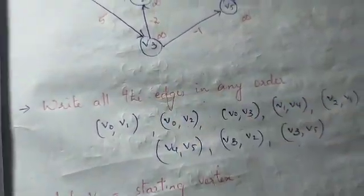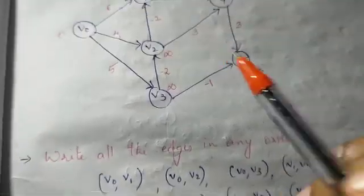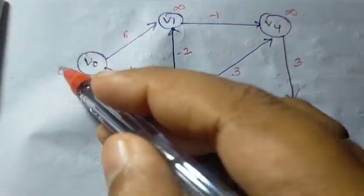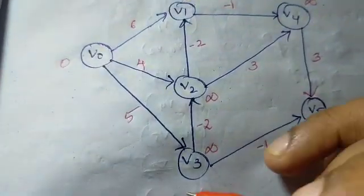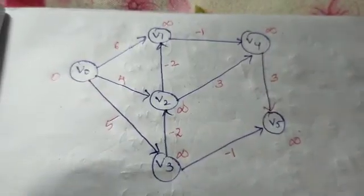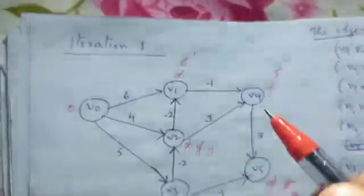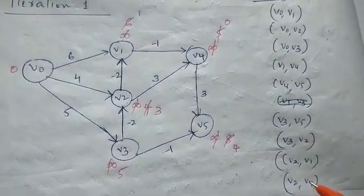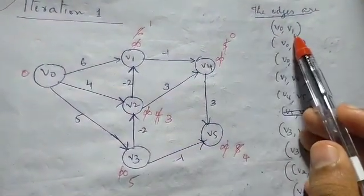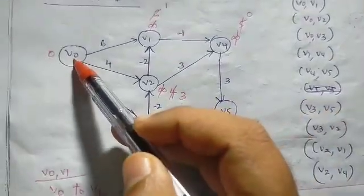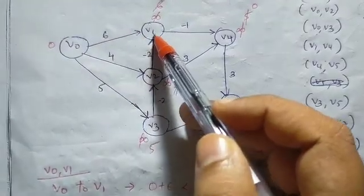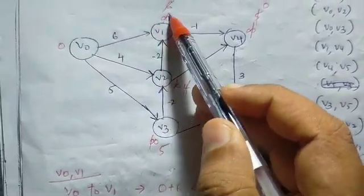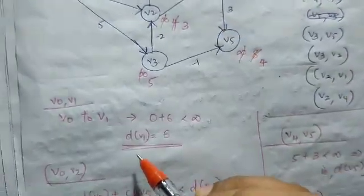We have to update the distances over 5 iterations for 6 vertices. We initialize the starting vertex distance to 0 and all other vertices to infinity. In iteration 1, we calculate the distance for every vertex.